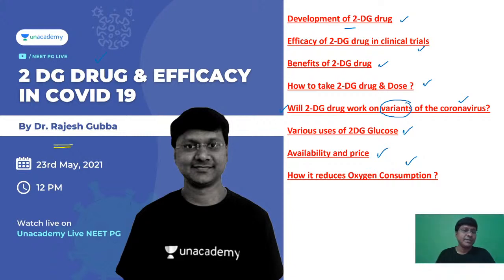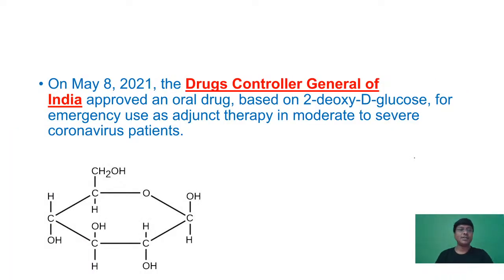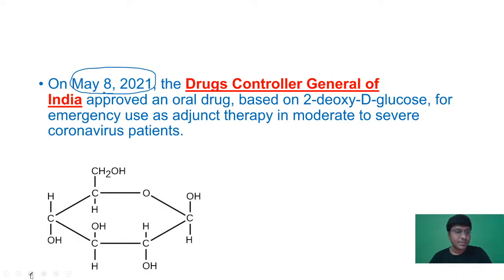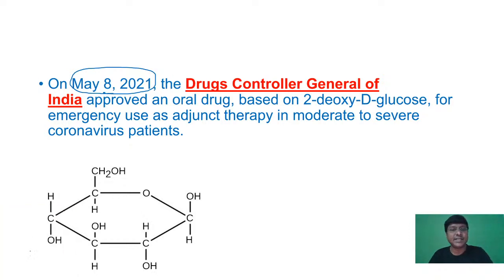Starting with the first point: when did this drug get approval? The DCGI — the Drug Controller General of India — approved this particular drug on May 8th, 2021. It was an emergency approval, and all trials which have to be done for this drug have not been completed, but on an emergency basis it was approved on May 8th by the Drug Controller General of India.